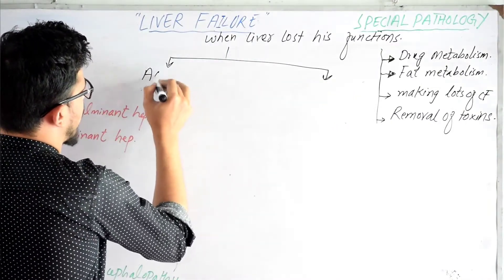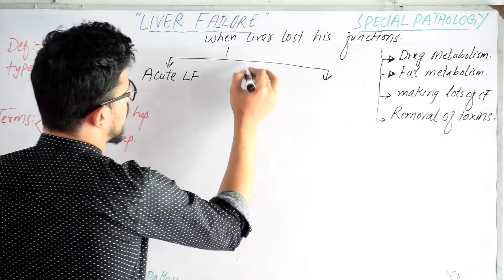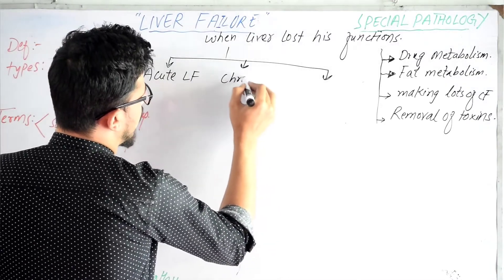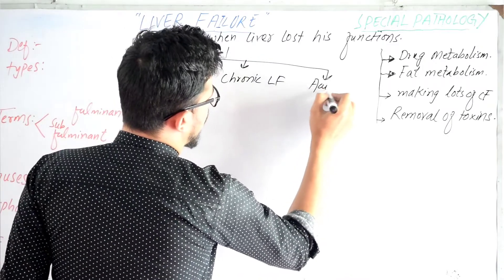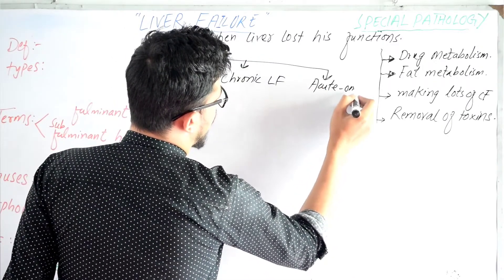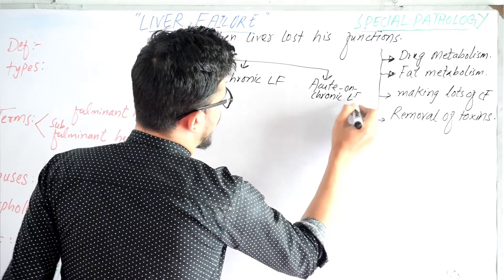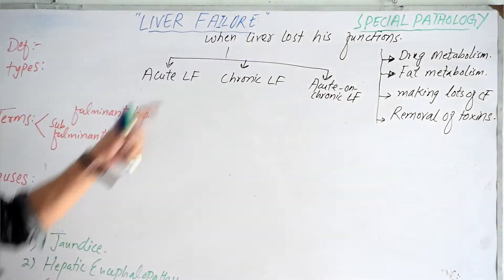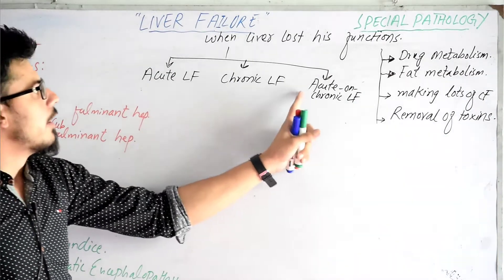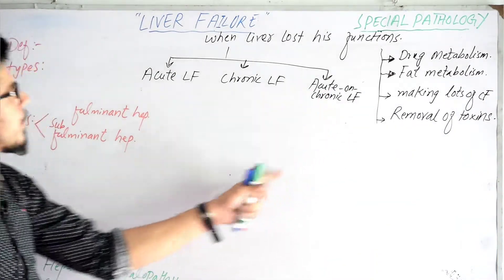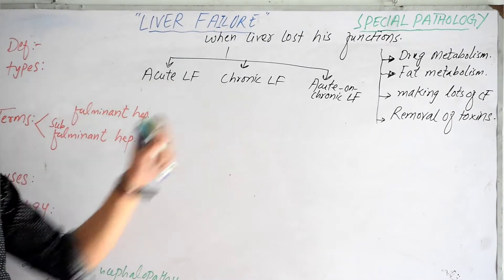There are three types of liver failure: acute liver failure, chronic liver failure, and acute-on-chronic liver failure. In this lecture, we will be focusing more on acute liver failure.